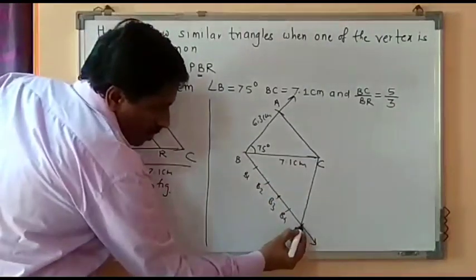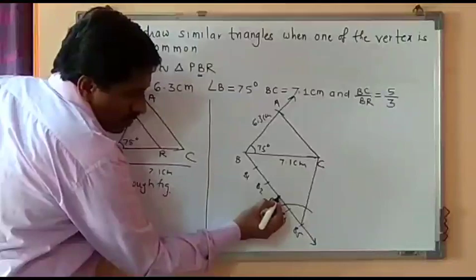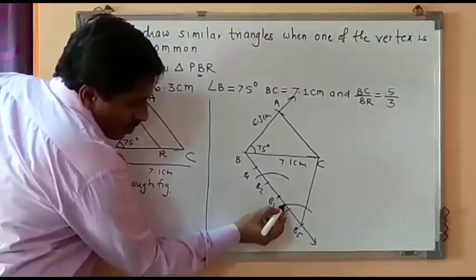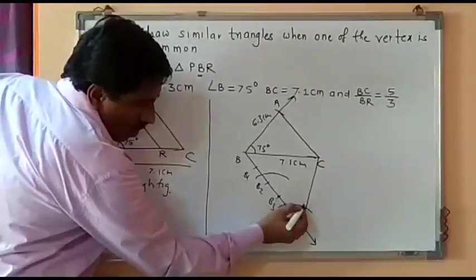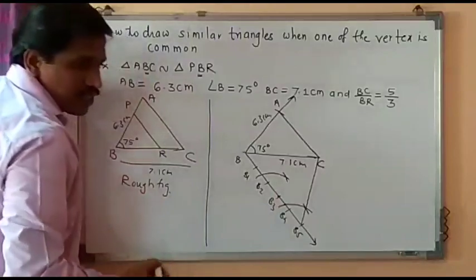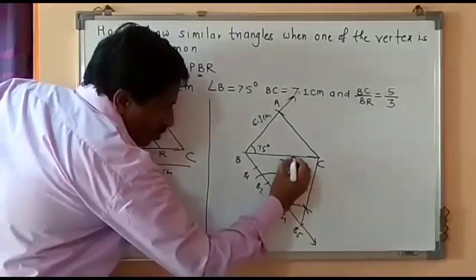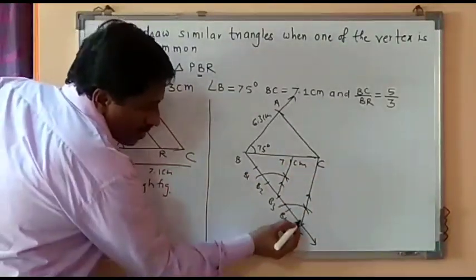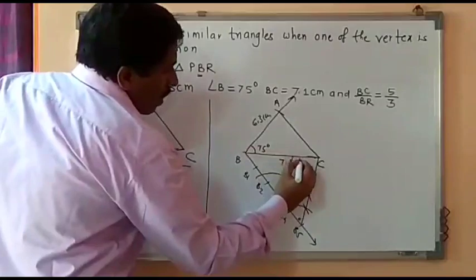Now draw a parallel line through point B3 parallel to B5C. Keep a steel point on B5, draw an arc intersecting two sides of the angle. Do not change the radius. Keeping the steel point at B3, draw an arc. Take the distance between the two arcs and draw another arc. Now join B3 with this point of intersection. This line is parallel to B5C as the corresponding angles are congruent. So here we get point R.